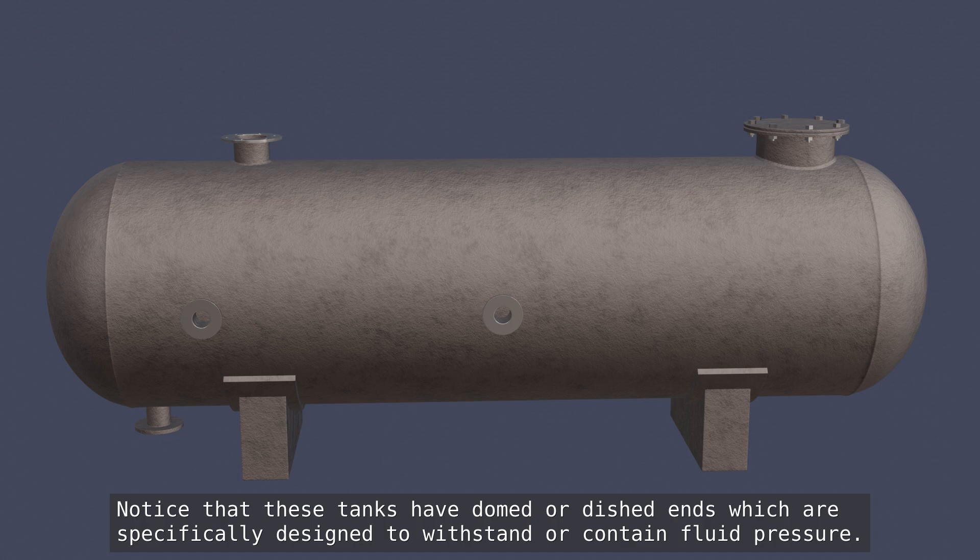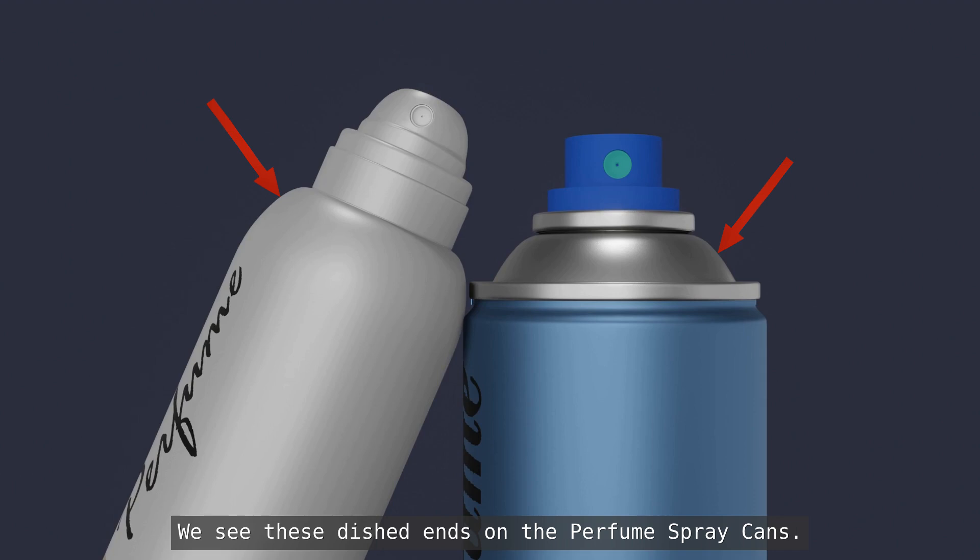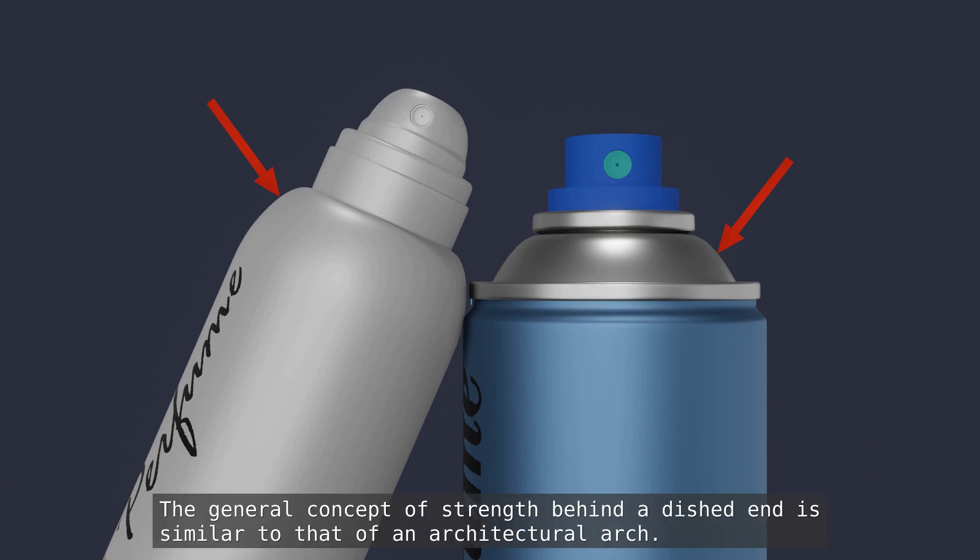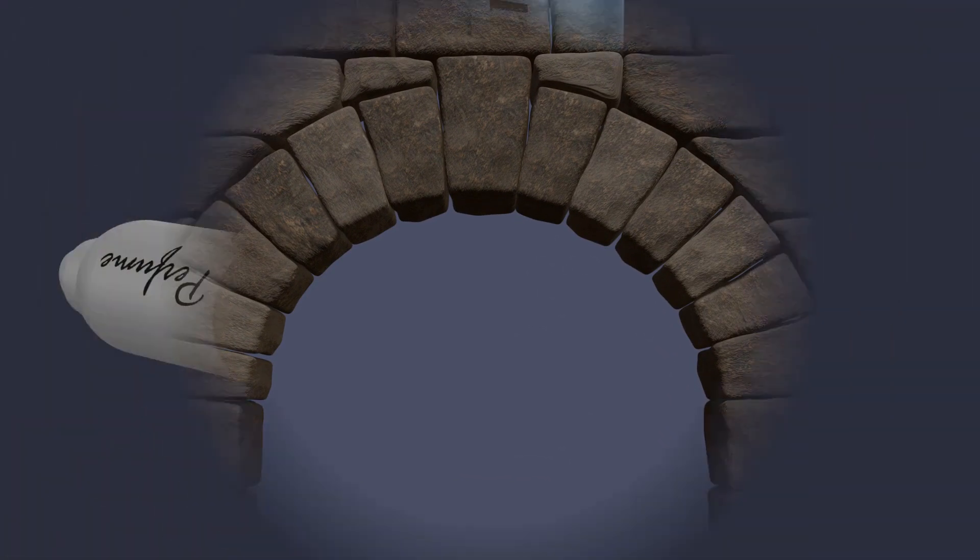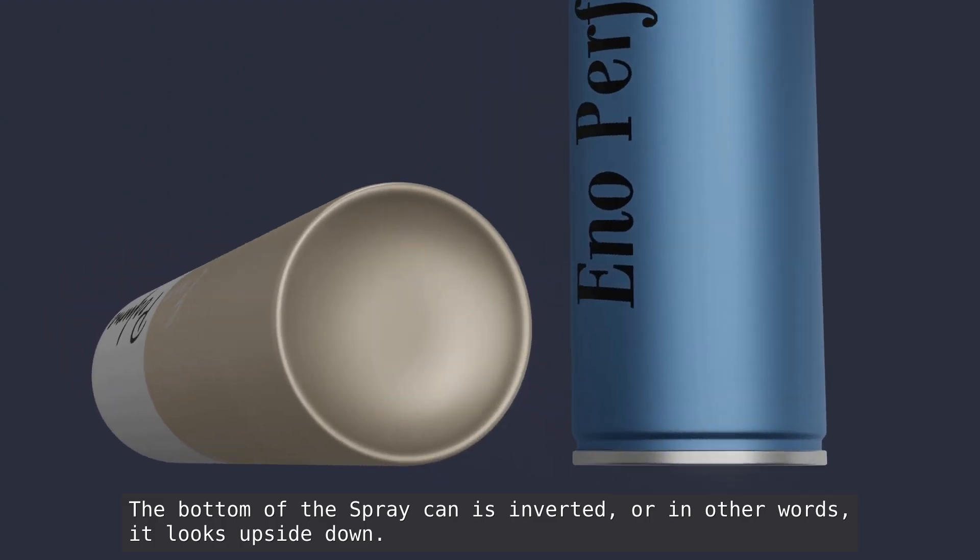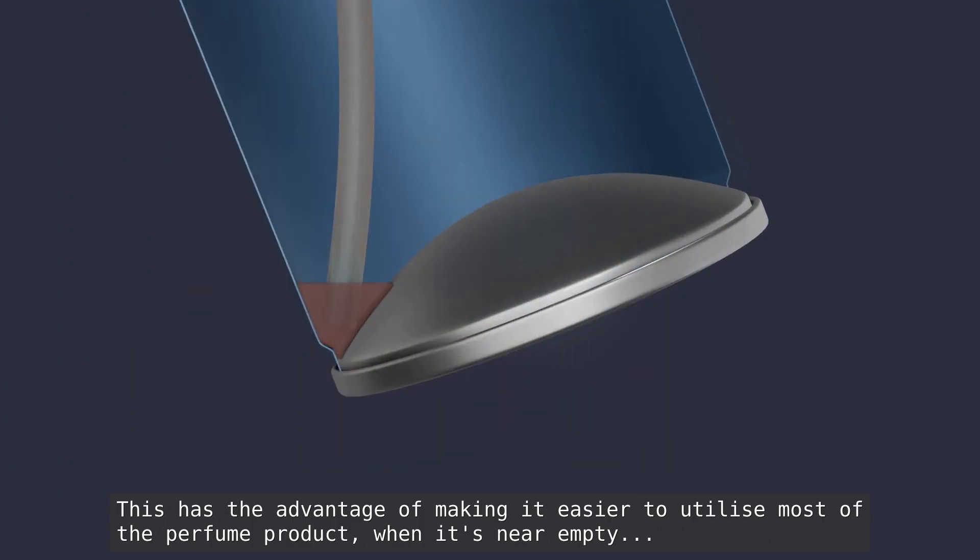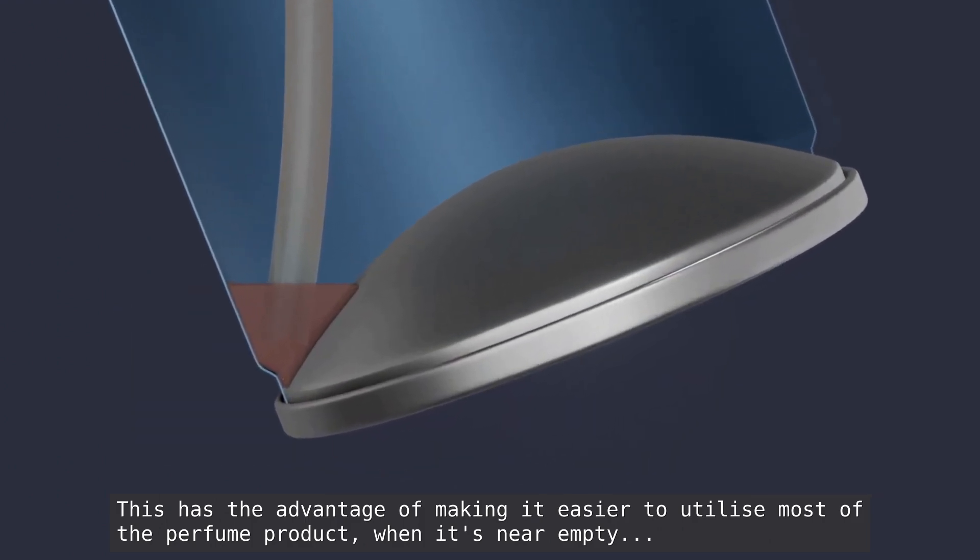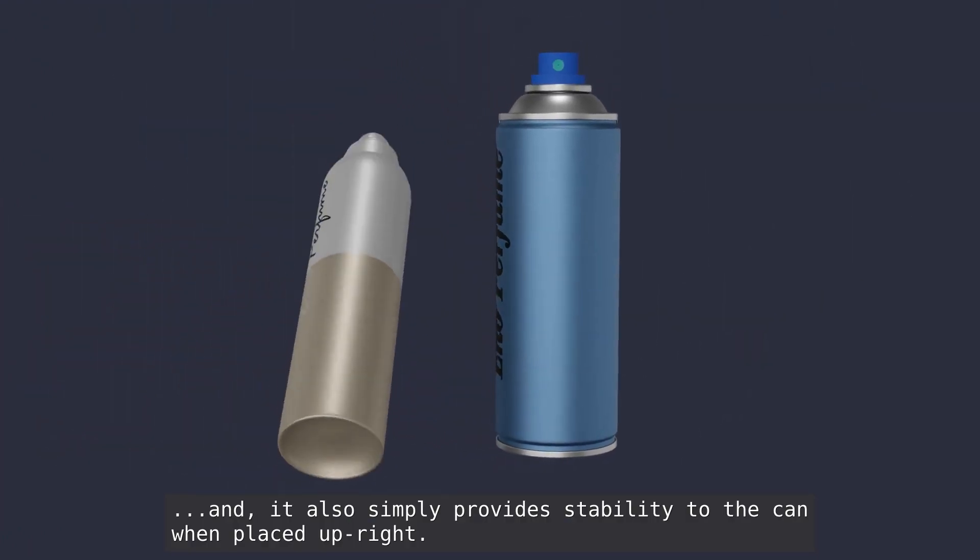Notice that these tanks have domed or dished ends which are specifically designed to withstand or contain fluid pressure. We see these dished ends on the perfume spray cans. The general concept of strength behind a dished end is similar to that of an architectural arch. The bottom of the spray can is inverted. This has the advantage of making it easier to utilize most of the perfume product when it's near empty, and it also simply provides stability to the can when placed upright.